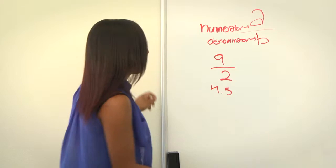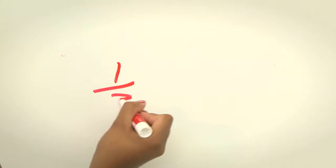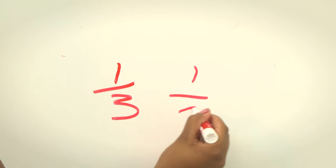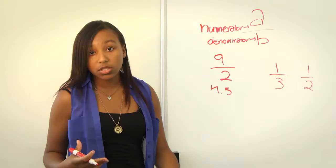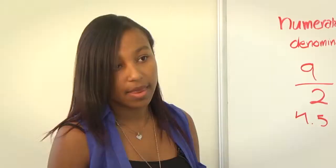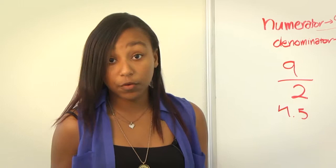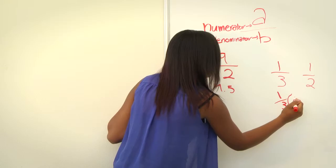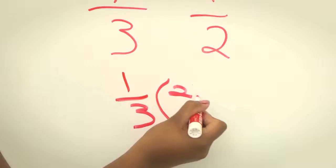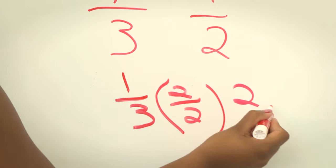In order to compare fractions, we have to change the denominators. For example, if we wanted to compare 1 third and 1 half, we would have to find the least common denominator between 3 and 2, which in this case would be 6. In order to get 6 in the denominator, we have to multiply it by an equivalent of 1. For example, for 1 third, it would be 1 over 3 times 2 over 2.